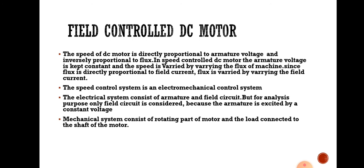In a DC motor, speed is directly proportional to the armature voltage and inversely proportional to the flux. In a field controlled DC motor, the armature voltage is kept constant and the speed is varied by varying the flux of the machine.